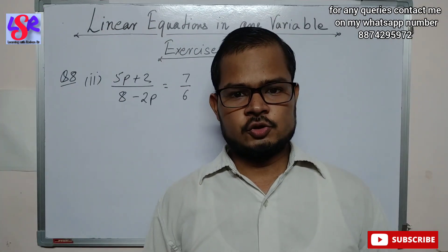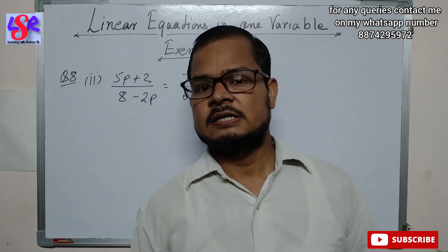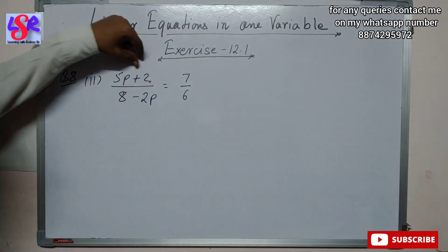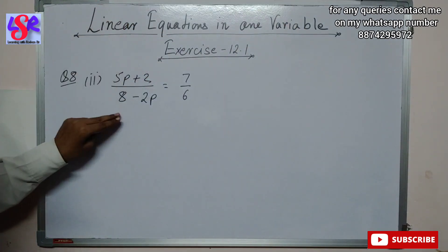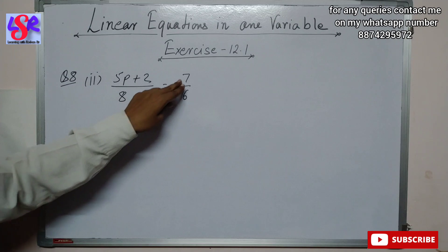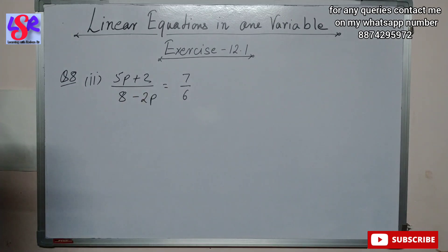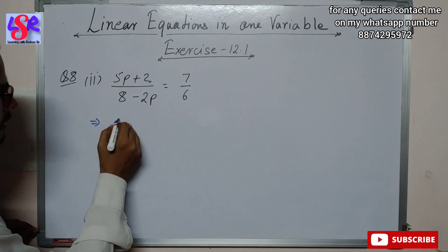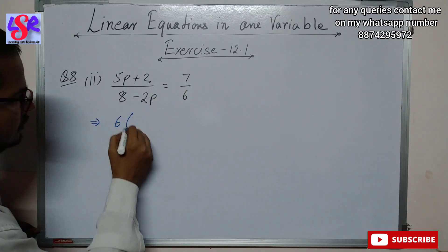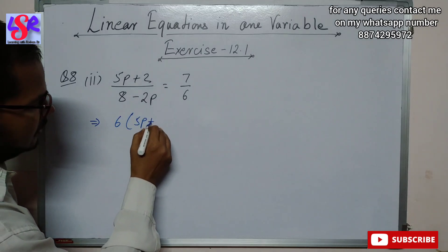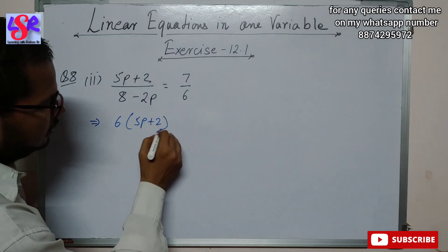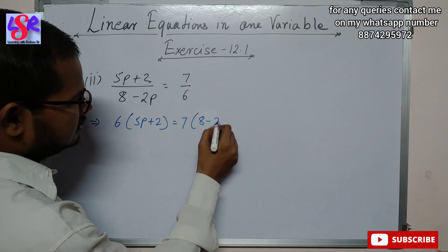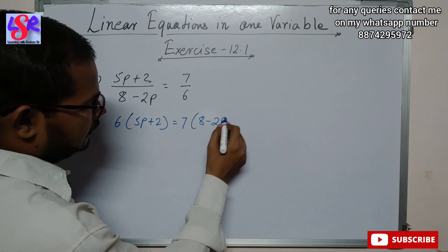Now we will do question number 8, second part. Here we are having (5p + 2) / (8 - 2p) = 7/6. Again we do cross multiplication, giving 6 × (5p + 2) = 7 × (8 - 2p).